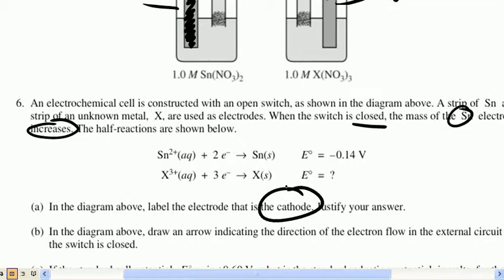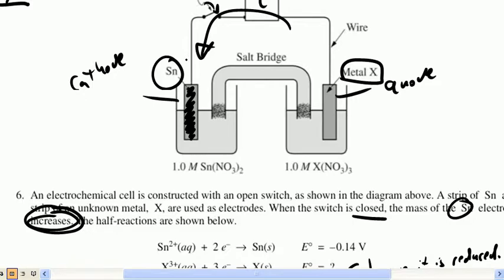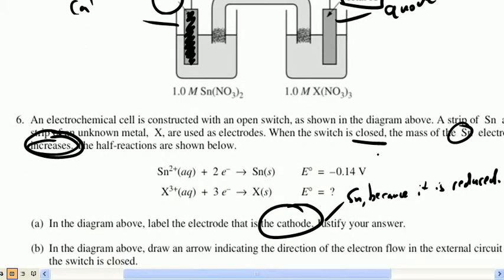They say in the diagram above, label the anode and the cathode, justify your answer. Just label the cathode. So, Sn, because it is reduced. Tin is reduced. We could say you could indicate that you know that because it said that the mass of it increases, but basically, that answer is fine. It's the direction that the electrons are flowing. They're flowing towards Sn, thus it is reduced, and it must be the cathode, because we know that anox red cat is our little mnemonic.